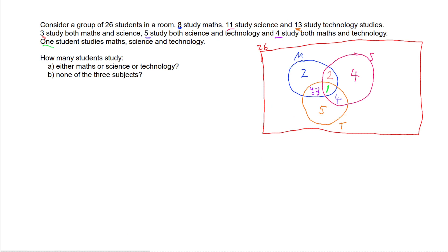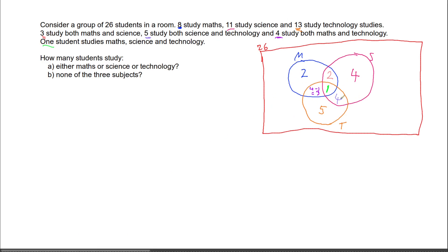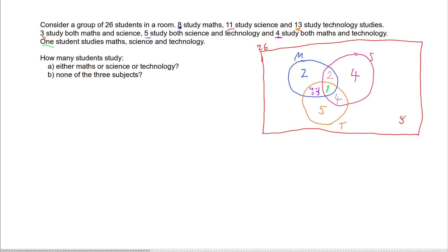The last thing we need to do is work out how many are not studying any of the subjects. Adding up all the numbers: two plus two plus four plus three plus one plus four plus five gives 21 students accounted for across the three subjects. But I've got 26 students in the class, so that means five students aren't studying maths, science, or technology — they study something else.